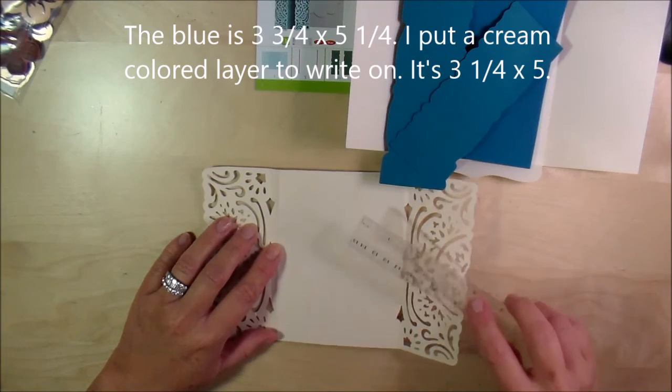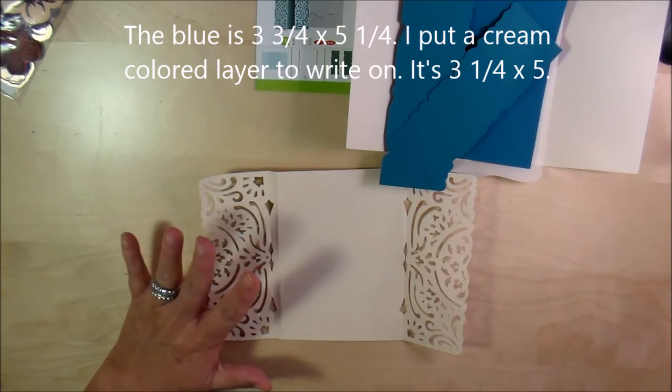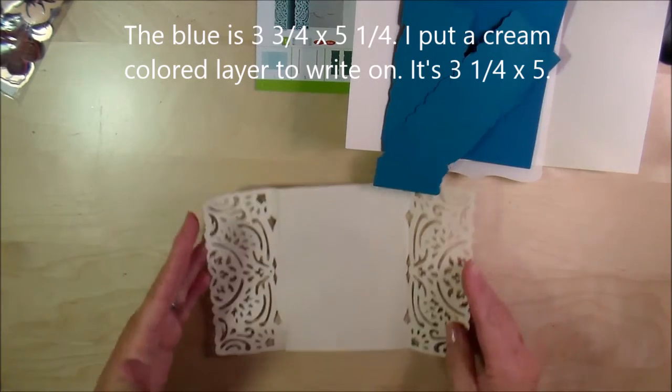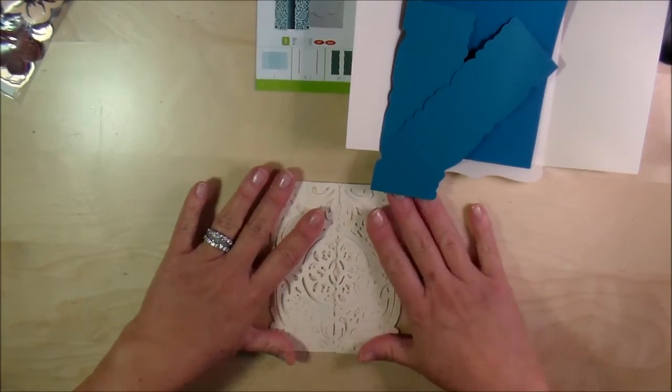I would cut out maybe a three and three-quarter sheet of blue and then go back and do a little bit smaller size of the cream and write the note, just to give it a little bit more color in it. That's going to fold over like that—scores all your lines for you.